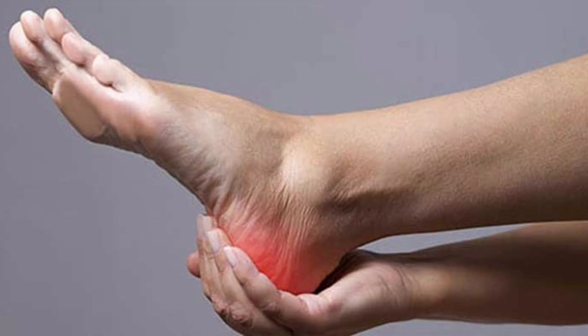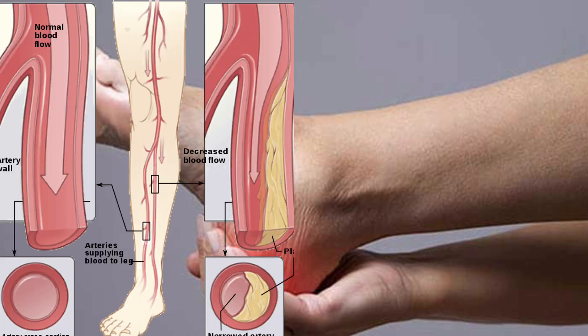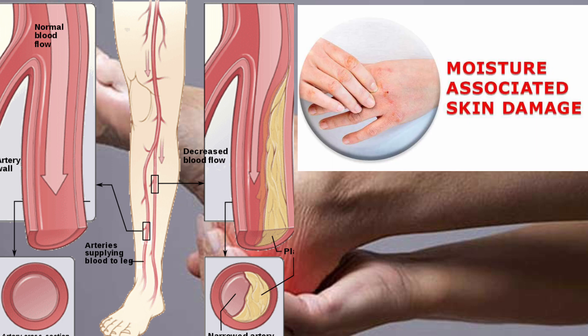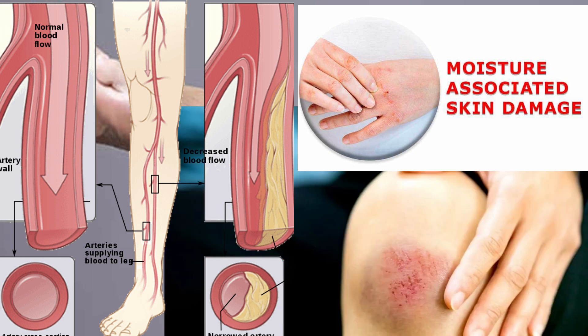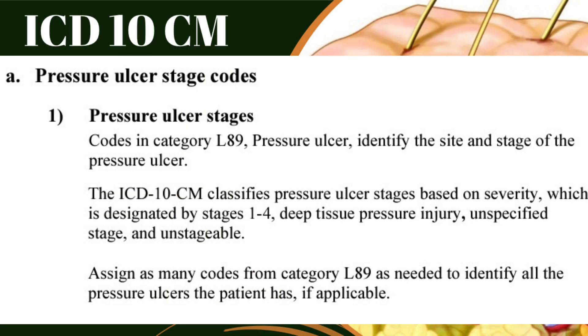A non-pressure ulcer is a type of ulcer that is not caused by constant pressure on a particular area for a long time. Instead, it may result from venous or arterial insufficiency, excessive moisture in the body or a particular area, or because of an injury. For a non-pressure ulcer, there is always a related underlying condition that led to it — keep this in mind.